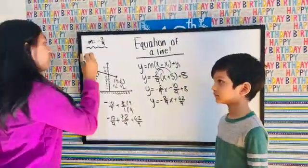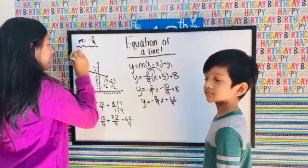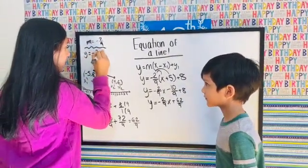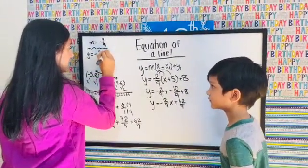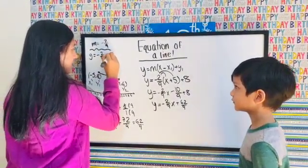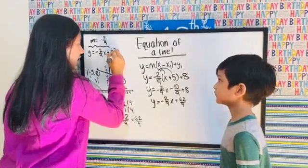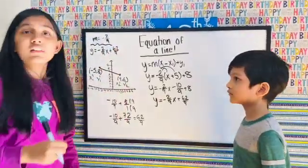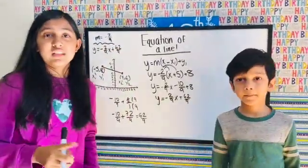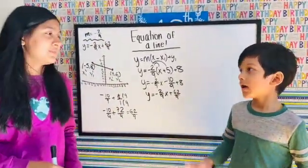So the equation of the line is y equals negative two over nine x plus 62 over nine. This is the end of the video, and we'll see you in the next episode.